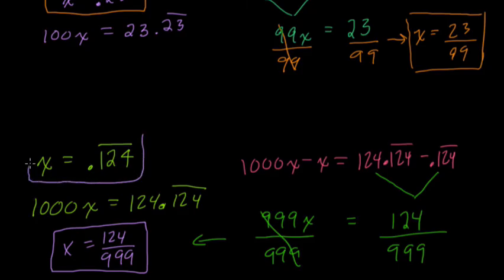And here on the right, we have 999x. To solve for x, we divide by 999. And then we have our fraction equivalent, where x equals 124 over 999. And all we did was show that that is the correct fraction for this decimal, their equivalent.